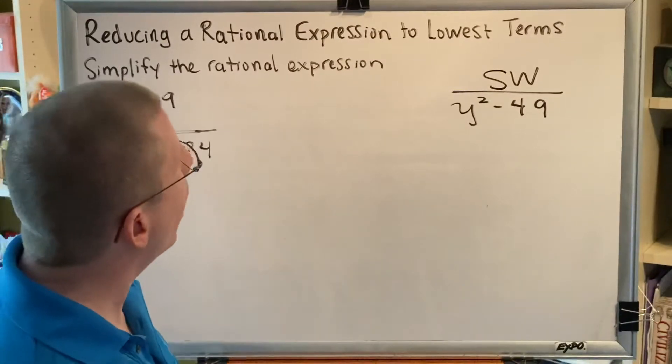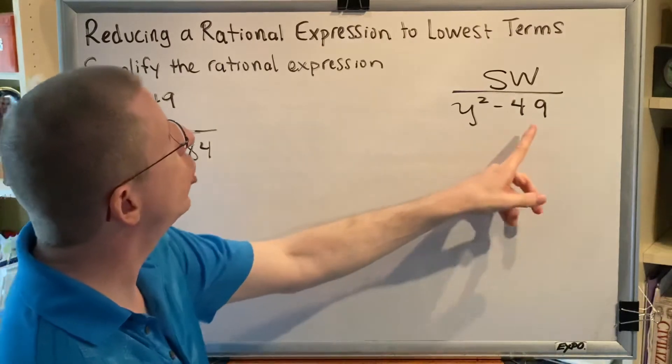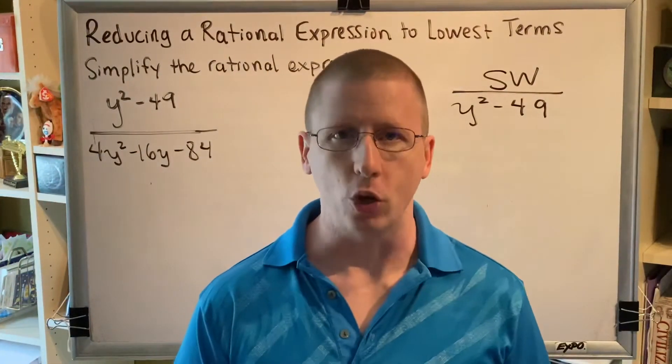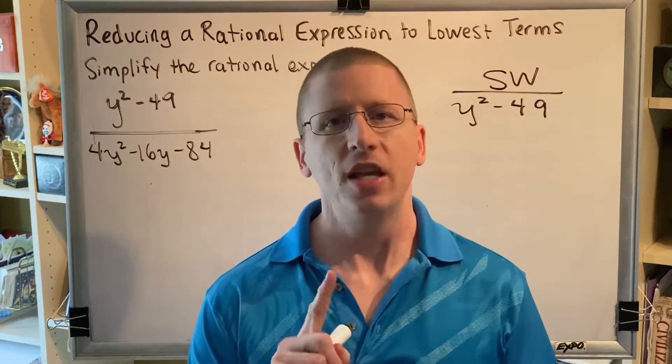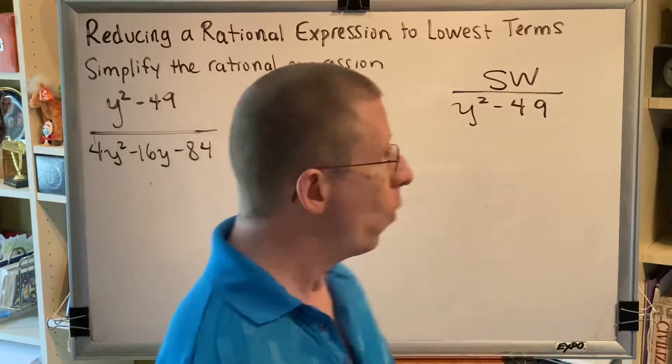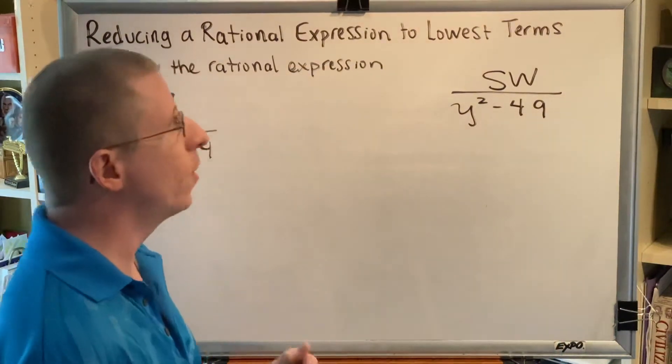So we find that we have two terms here, which means there are three possible factoring methods that we could use. It could be a difference of squares, it could be a difference of cubes, or it could be a sum of cubes, or possibly none of those.